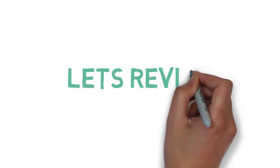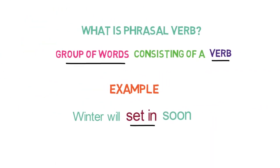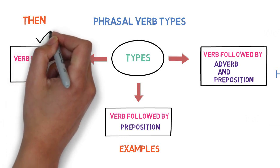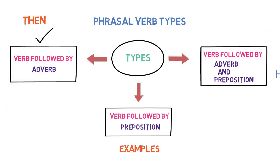That's all about phrasal verbs. Let's quickly revise what we have learned in this video. Firstly, we discussed what is a phrasal verb with an example — it is a group of words containing a verb. Then we defined three types of phrasal verbs: the first is phrasal verb containing an adverb, the second is phrasal verb containing a preposition, and the third is phrasal verb containing adverb and preposition. And lastly, we saw examples of each of them to make things clear.